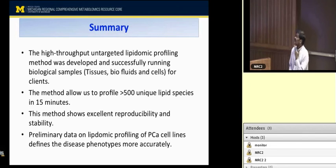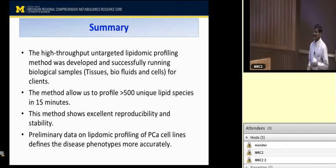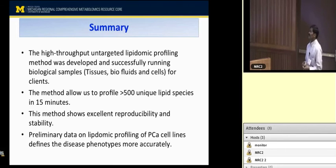In summary, using this current methodology we have been successfully running biological samples like tissues, biofluids, and cell lines. This method allows us to identify more than 500 unique lipid species within a 15-minute run. The method shows excellent reproducibility and stability, and based on preliminary data, the prostate cancer cell line lipidomic profiling defines the disease phenotype more accurately. Thank you for your attention and I am happy to take questions.